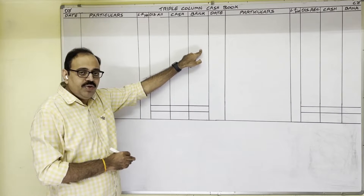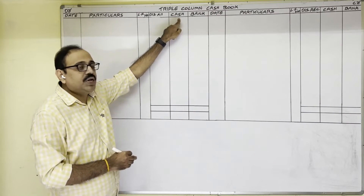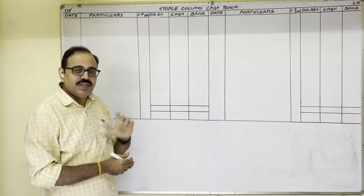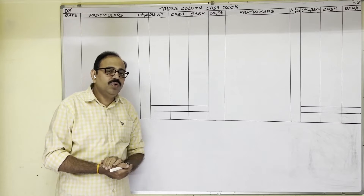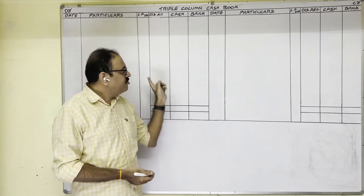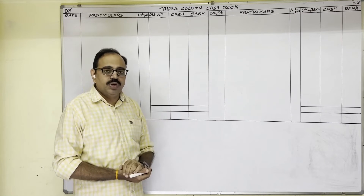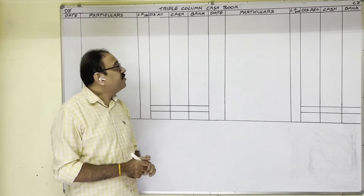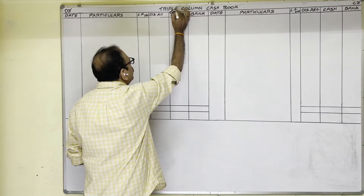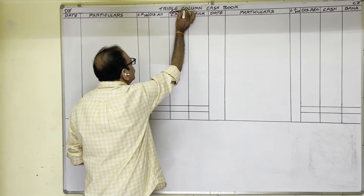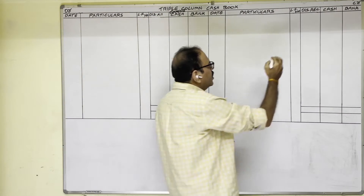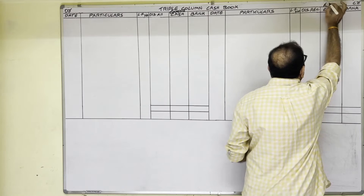Cash account is a real account because cash is an asset. The rule for real accounts is: debit what comes in, credit what goes out. So in the firm's books, if cash is coming into the firm, write on the debit side cash column. If cash is going out from the firm, write on the credit side cash column.